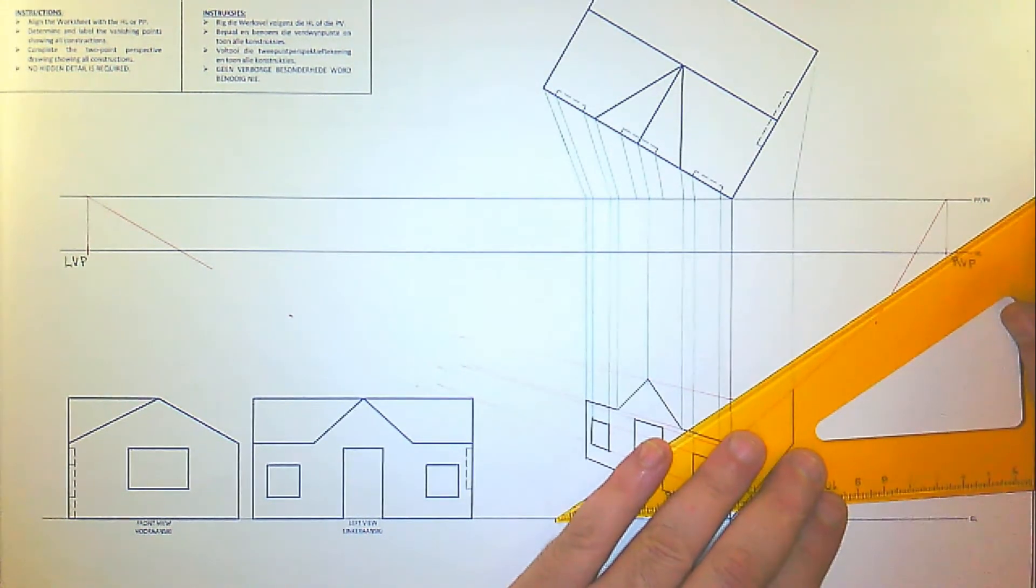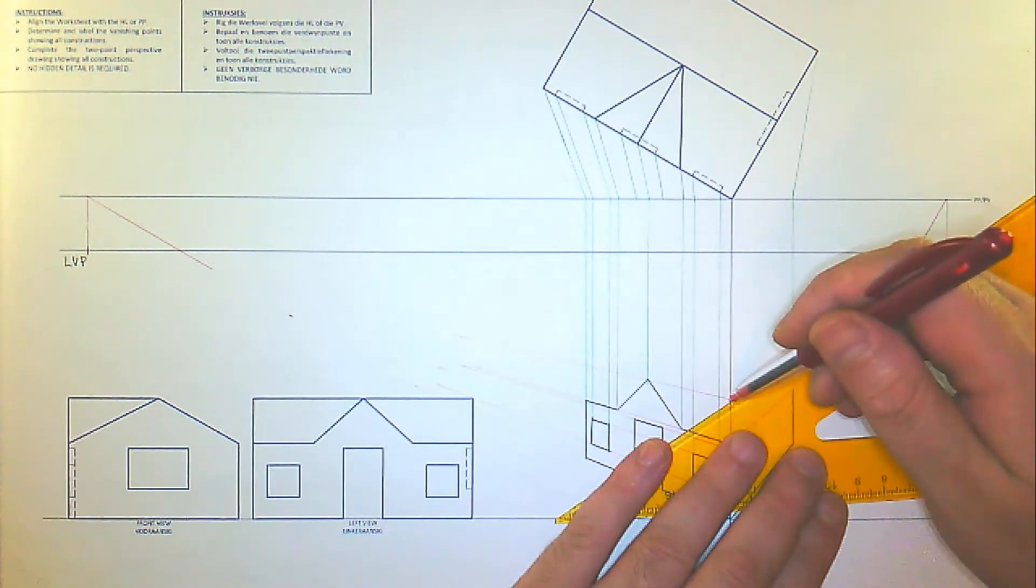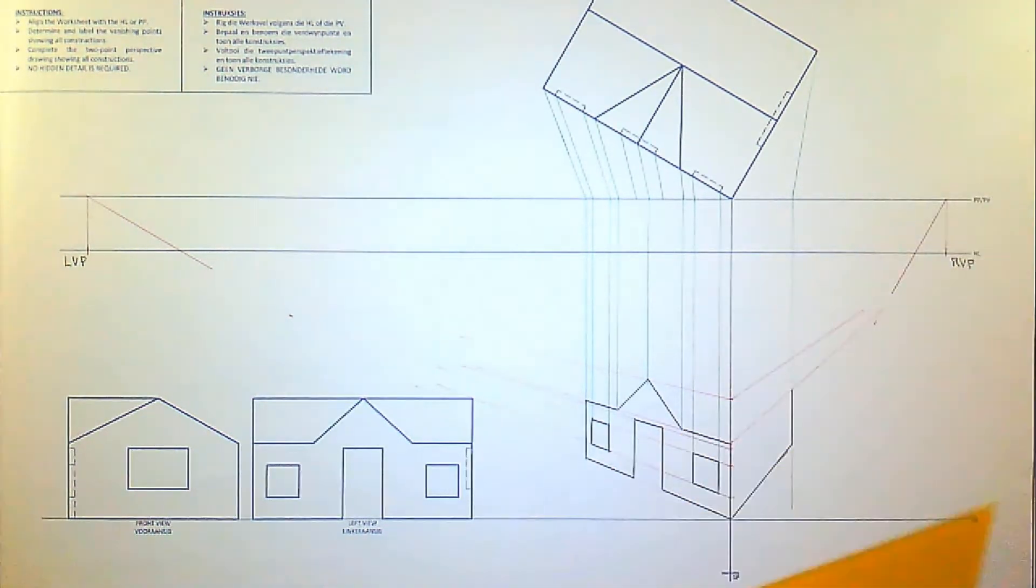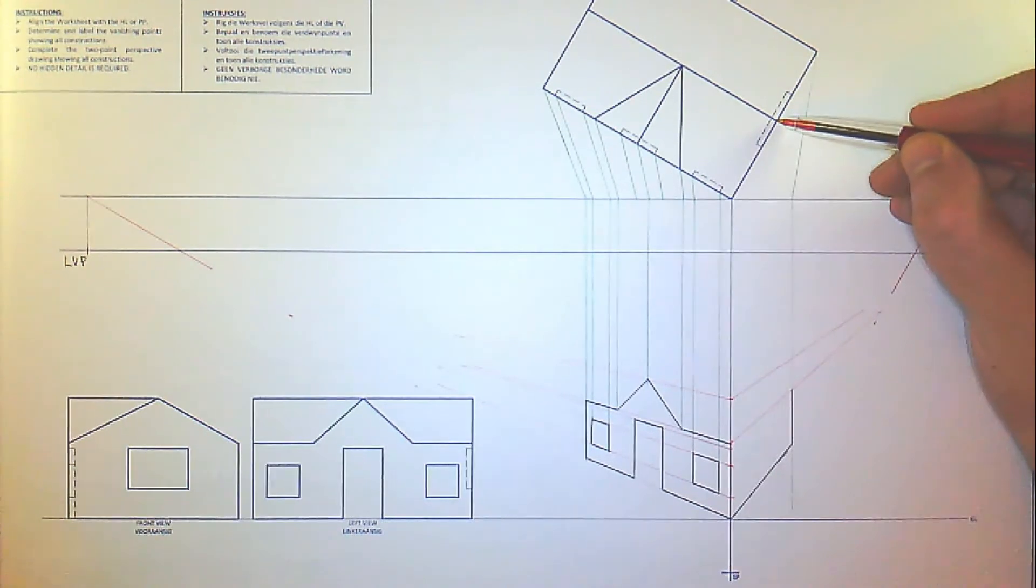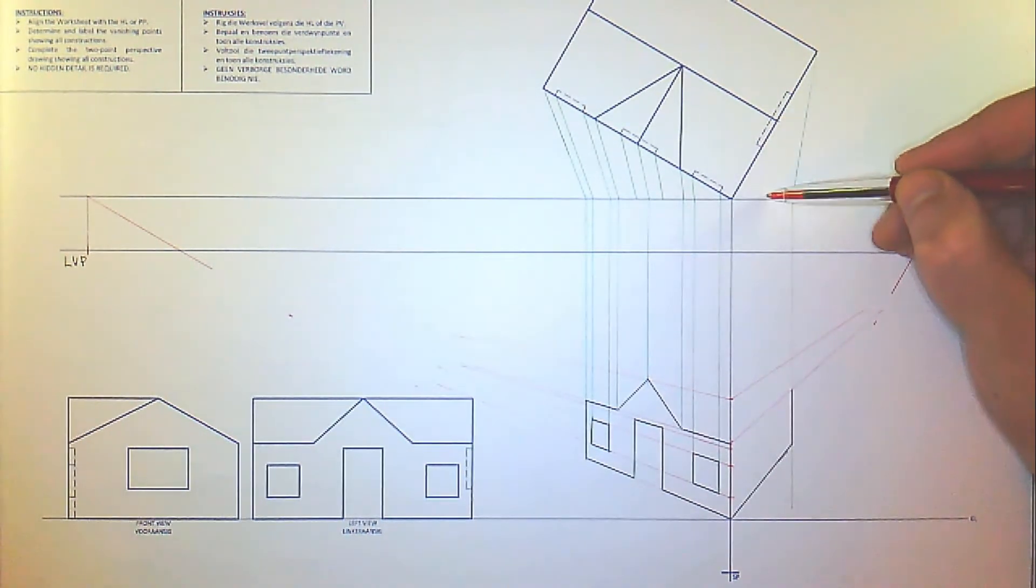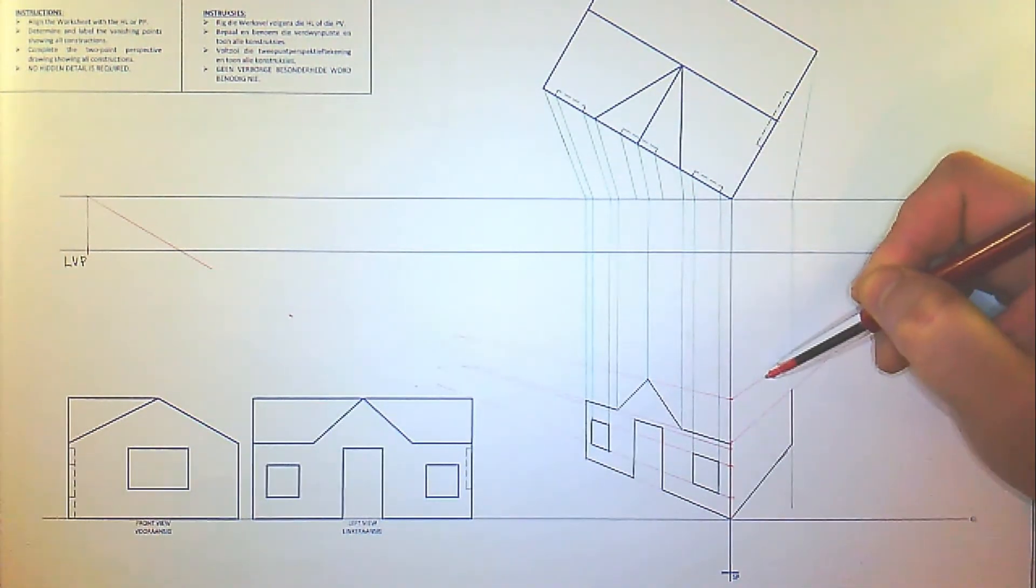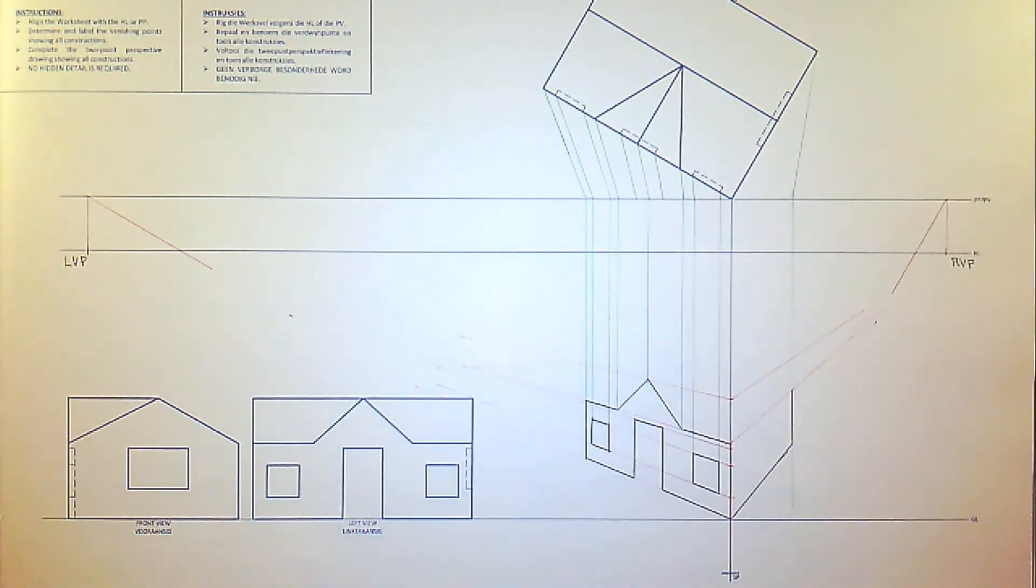With a construction line. And then we can take this starting point to the SP and down, and when we hit this level we can actually then take the point to the right vanishing point.